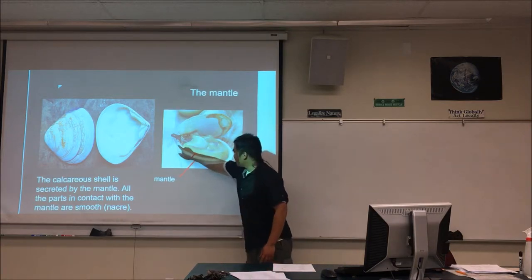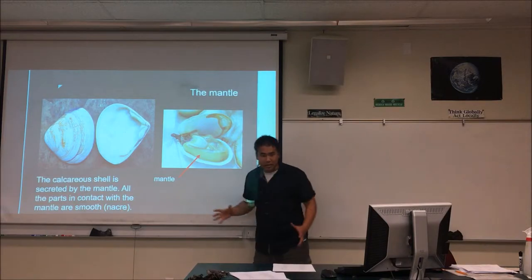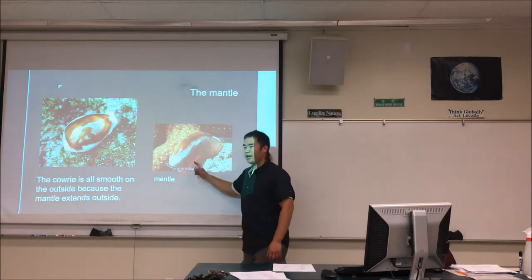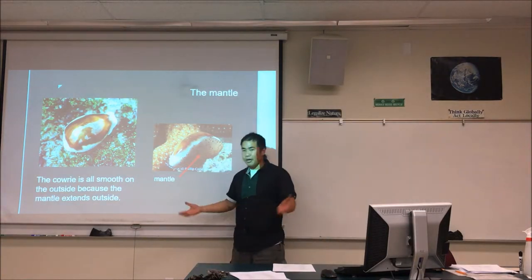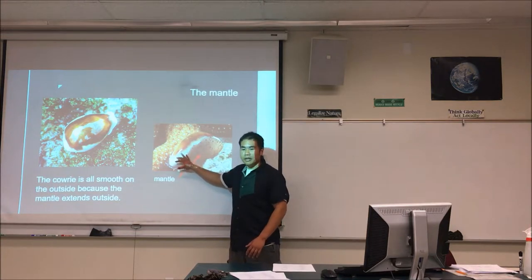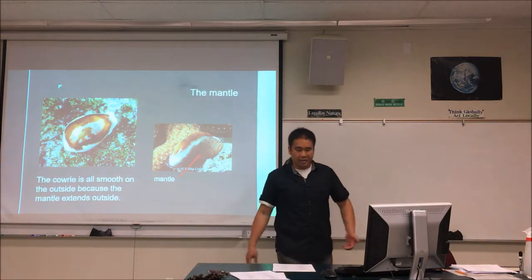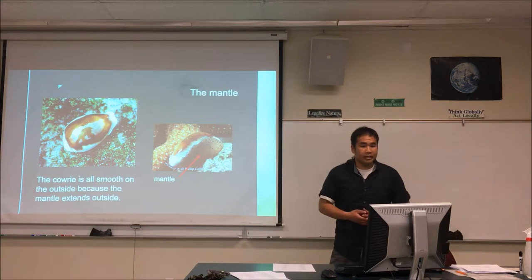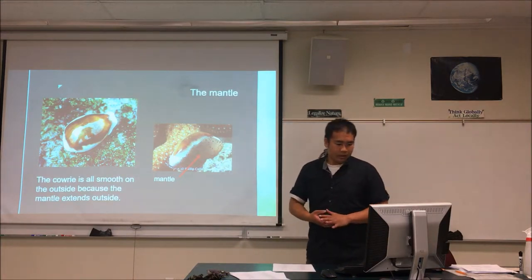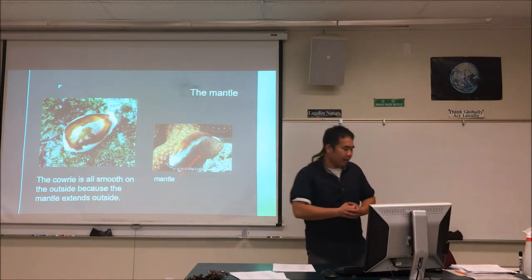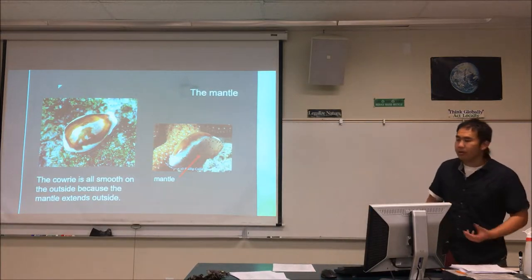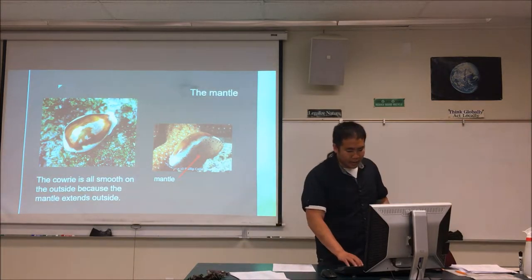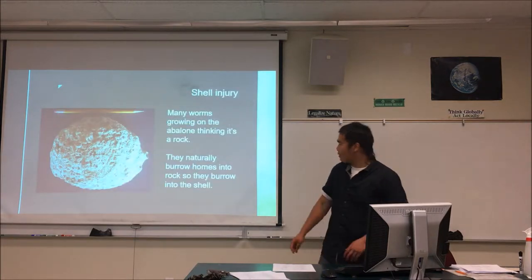If the mantle is over here, that area will be smooth because it's secreting nacre there. The mantle is secreting nacre on the edge, making that part smooth and growing the shell bigger. Looking at the cowrie, its mantle extends out and over the whole shell, covering even the outside with nacre — giving it an entirely smooth shell all around. But that's just a rare exception — most organisms are only smooth on the inside.